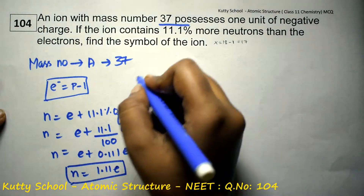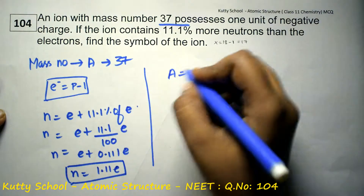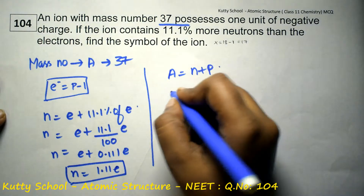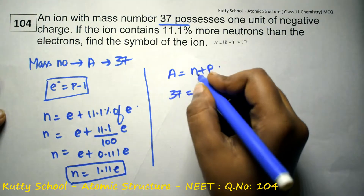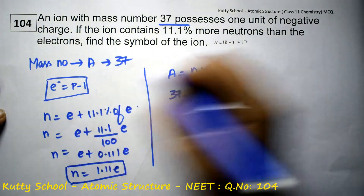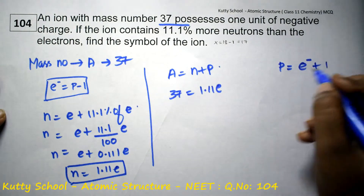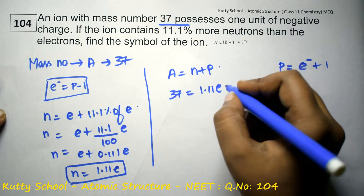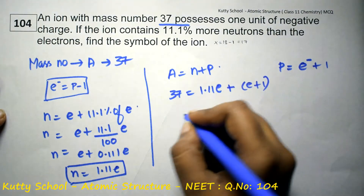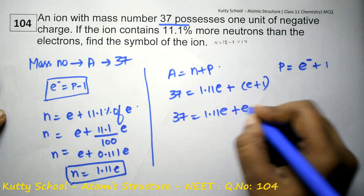Since neutron equals 1.11 electron and electron equals proton minus 1, the atomic mass equation gives: 37 equals neutron plus proton plus 1. Substituting: 37 = 1.11 electron + electron + 1.